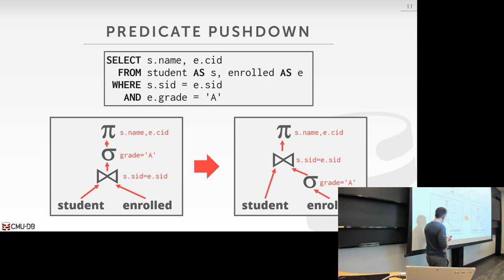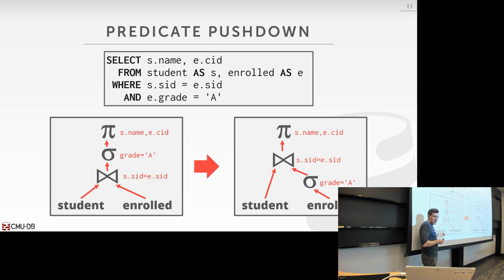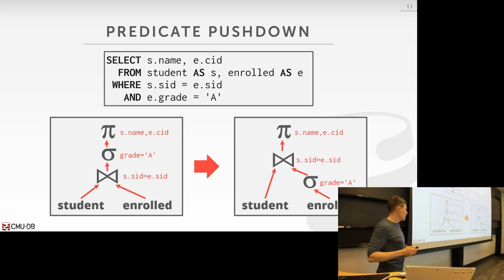A student asked whether a query optimizer would also be able to change which table is inner versus outer in the join. The answer is yes, but that requires a cost model, because you need to know how much data is being fed in — the smaller table should always be the outer table. The predicate pushdown we can do without ever looking at the data.